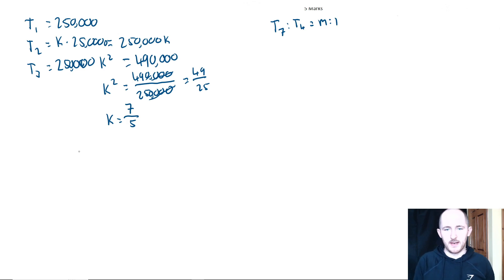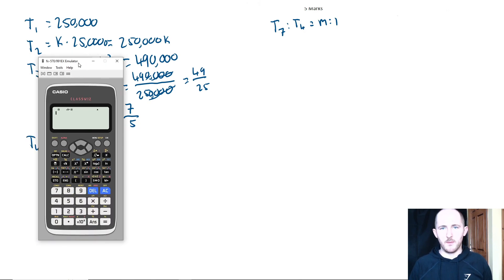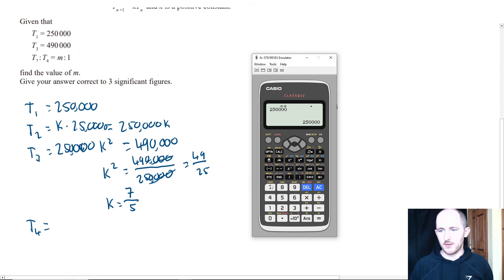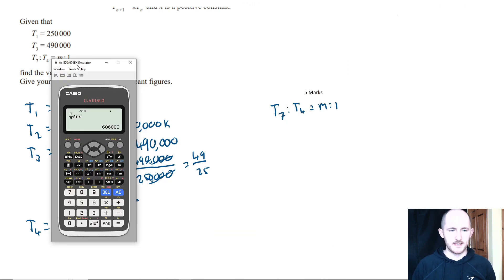Now all we need to do is work out the expression for t_4 and also t_7. Let's get our calculator open and write our expression. First, we start with 250,000, and then k is 7 over 5, so our equation is 7 over 5 times answer. So this is going to be t_2, that's t_3, that's t_4, so 686,000.